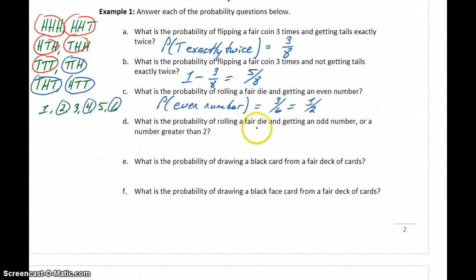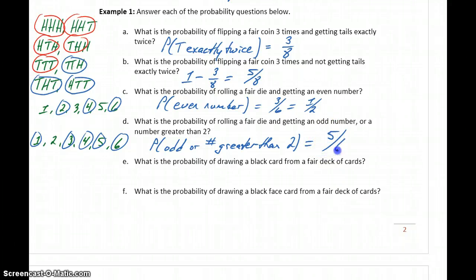Now a slightly different question. What's the probability of rolling a fair die and getting an odd number or a number greater than two? So we could write our sample space again. And now we're interested in odd numbers. So one, three, or five. But we're also interested if we get an odd or if we get a number greater than two. So three and five, those are both greater than two. We already have those circled. Four and six are both greater than two. So now we have all of the odd numbers and all of the numbers greater than two, which gives us a probability of five out of six.